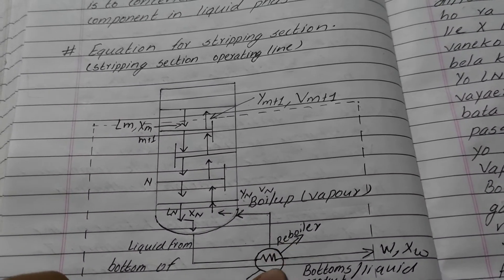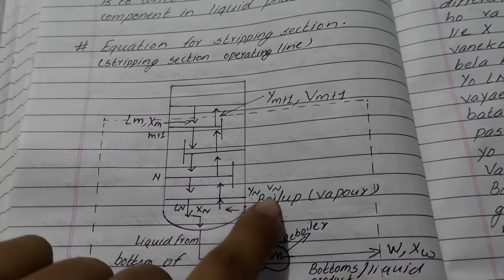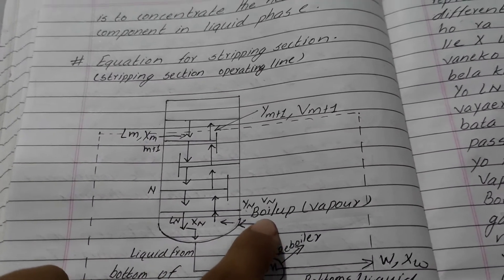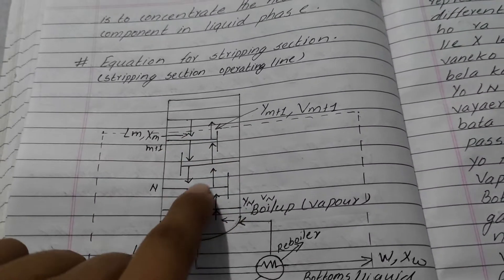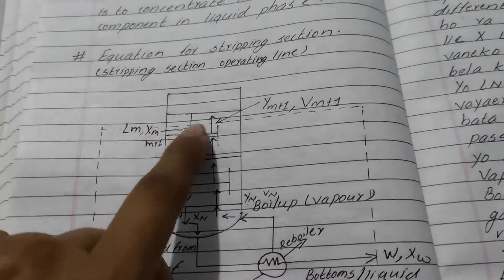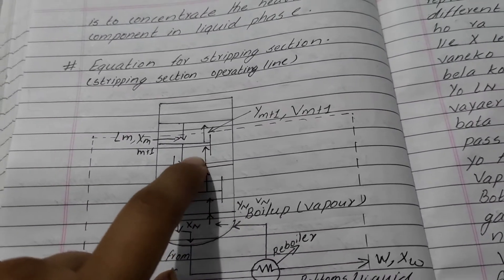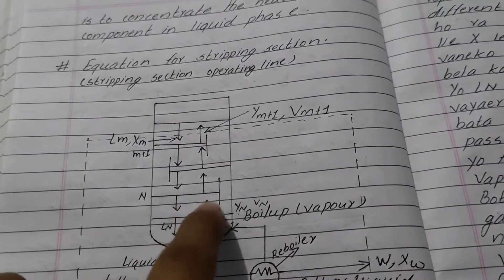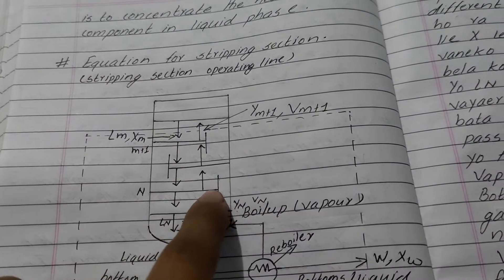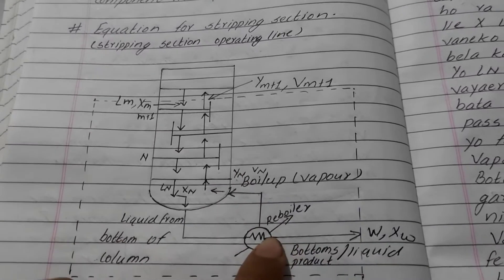We pass on the reboiler and heat the liquid. The liquid is converted again and its properties change. All components get into the liquid feed. We will do this work with the reboiler — we can convert this in the reboiler.